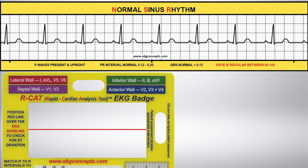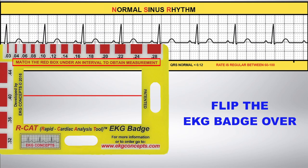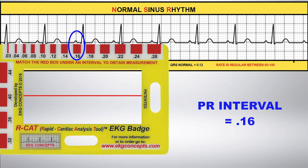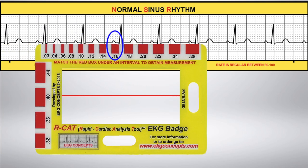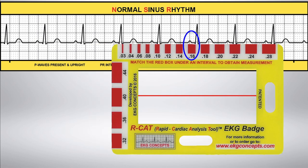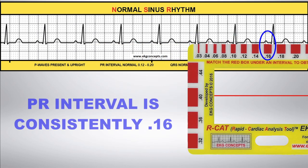Notice that all the P waves are present and upright. Now flip the badge over and align the calibrated red boxes under the cardiac intervals starting with the PR interval. Slide the badge along the rhythm strip to make your measurements. The PR is consistently 0.16 and within the normal range of 0.12 to 0.20.